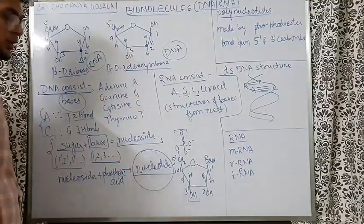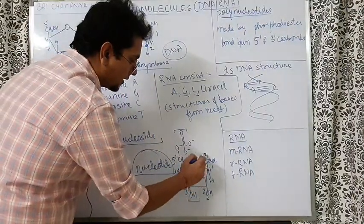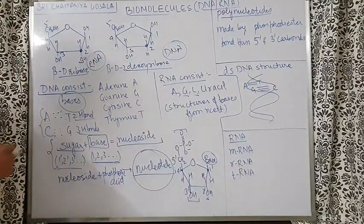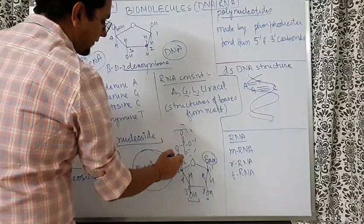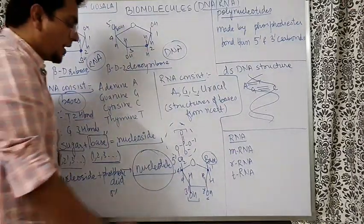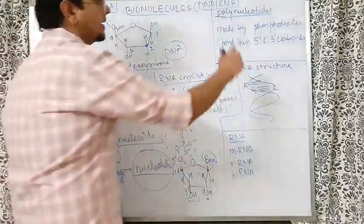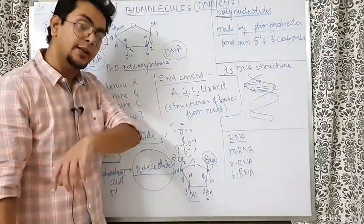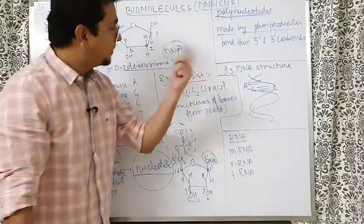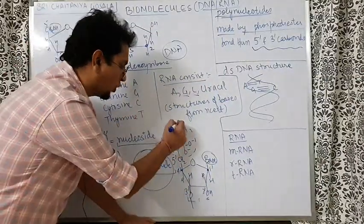In the structure of a nucleotide, taking ribose sugar to make RNA (deoxyribose gives DNA): at the 1-prime position the base is attached, and at the 5-prime position the CH2OH group gets associated with the phosphate group. Nucleotides link to each other forming a polynucleotide via phosphodiester bonds — in carbohydrates the bond was glycosidic, in proteins it was peptide bond, and in nucleotides it is phosphodiester bond. This bond forms between the 5-prime and 3-prime carbons, creating a long chain.